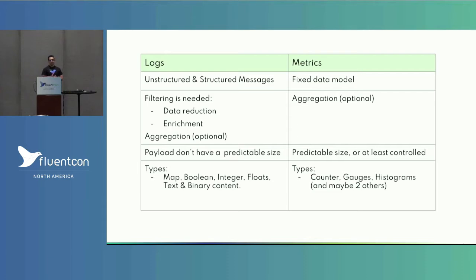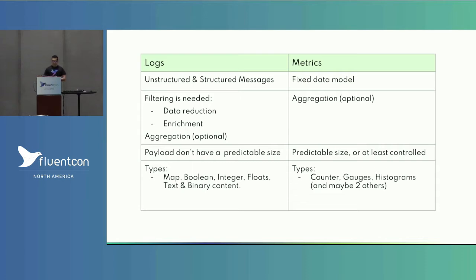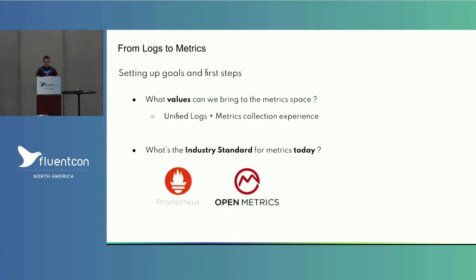In logs you don't have a predictable size for the data — the more data you add, the more you have to optimize memory and performance. In metrics, you know pretty much what the maximum size for each metric is. You can't always know how many metrics you're going to get, but you have more control than with logs. In logs you have maps, booleans, integers, floats — any kind of data type. In metrics you have counters, gauges, and histograms, so the use cases are more constrained.